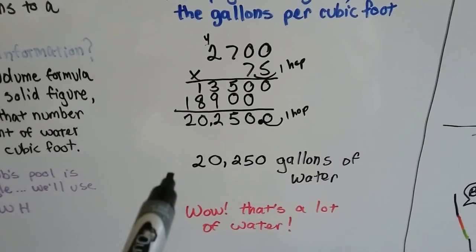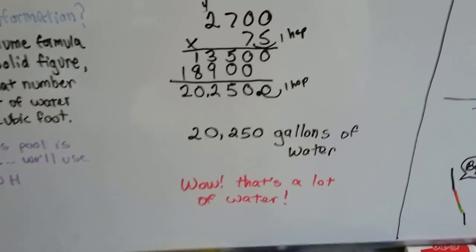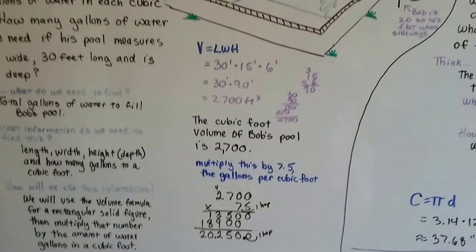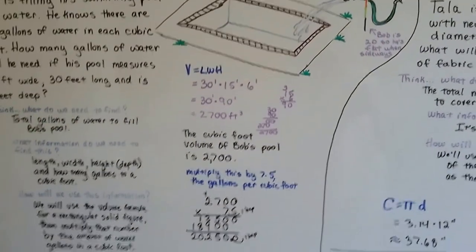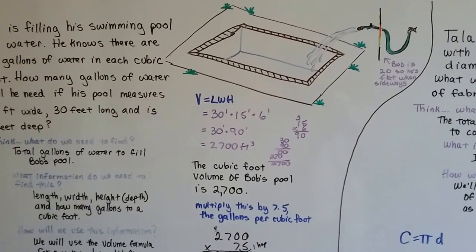So that means there's 20,250 gallons of water in his pool. That's a lot of water. I know there's people that are desperate for water and this guy's just filling his pool with 20,000 gallons of it. Bob. Wow.